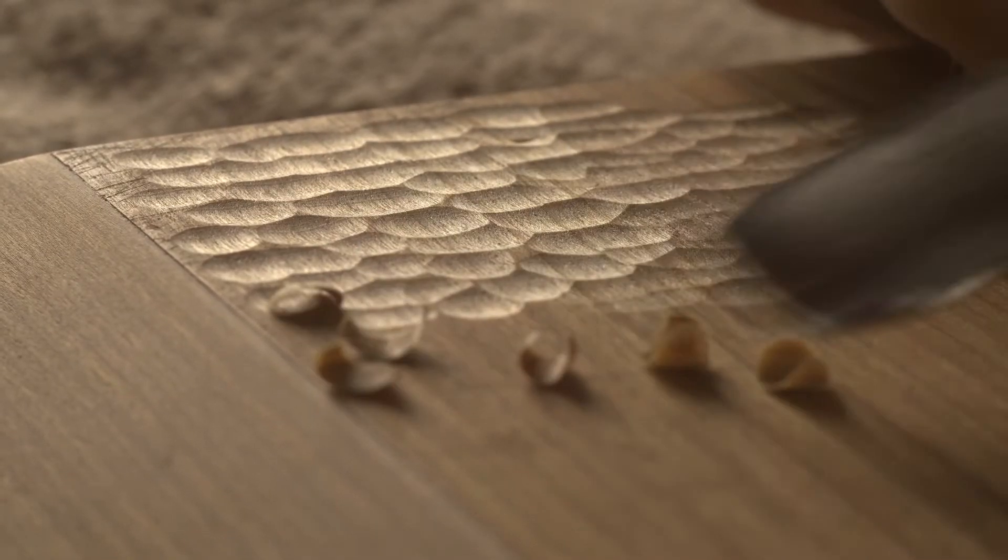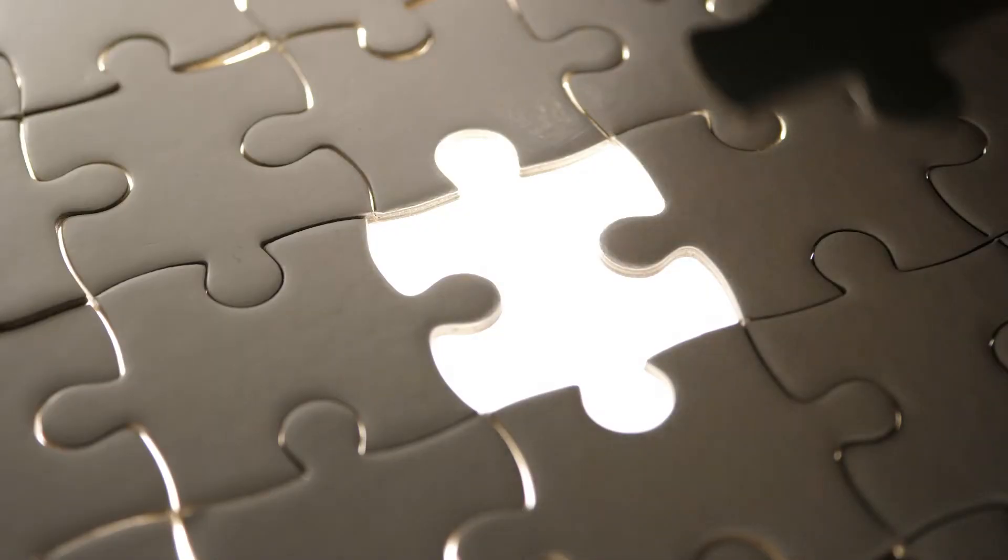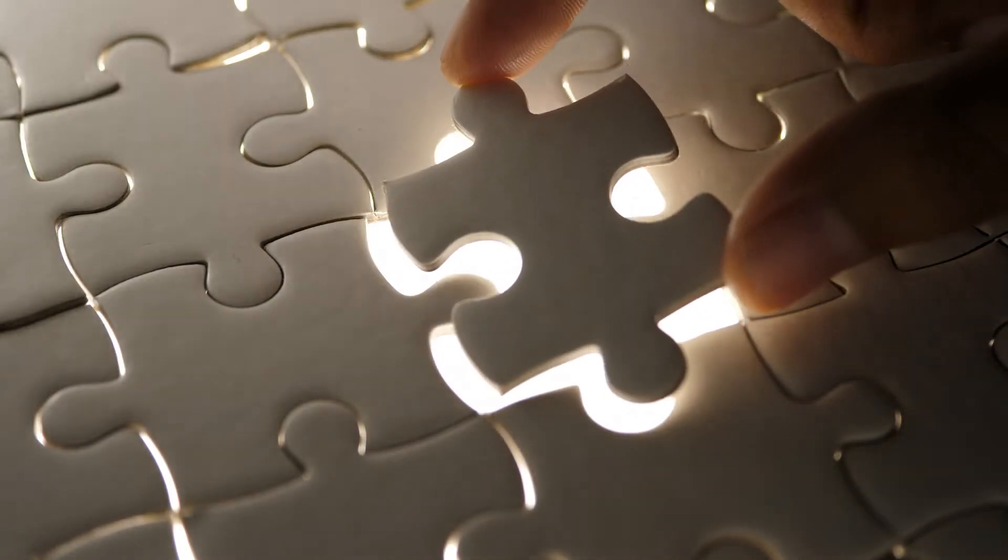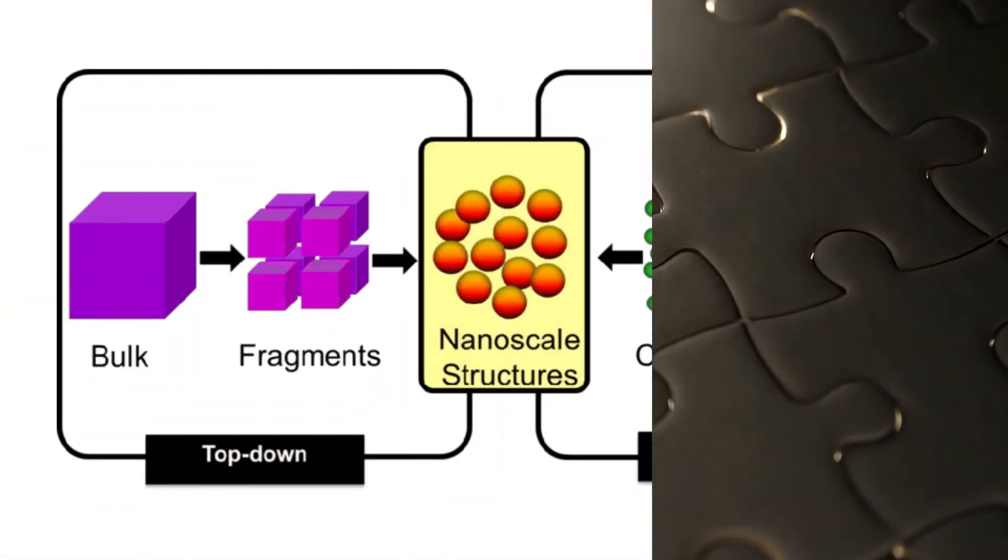But how do you get to such a small size of working material? Do you break down bigger stuff, like sculpting something out of stone? Or do you put together smaller pieces to make something larger, like completing a jigsaw puzzle? Well, it turns out you can do both to get to the nano realm. These two approaches are called the top-down and bottom-up approaches, respectively. We will now discuss them in some detail.